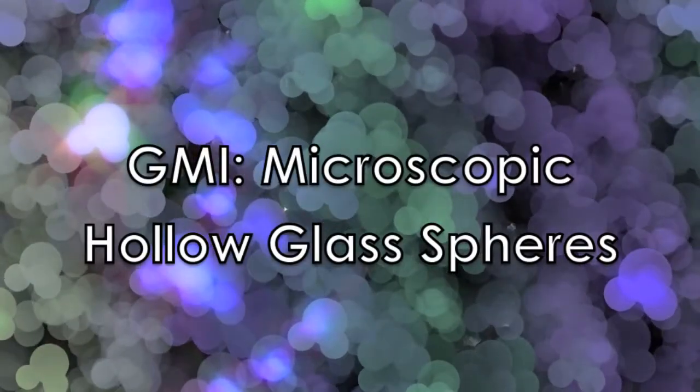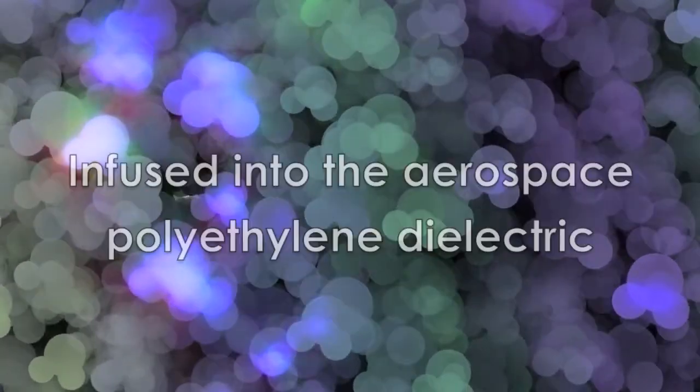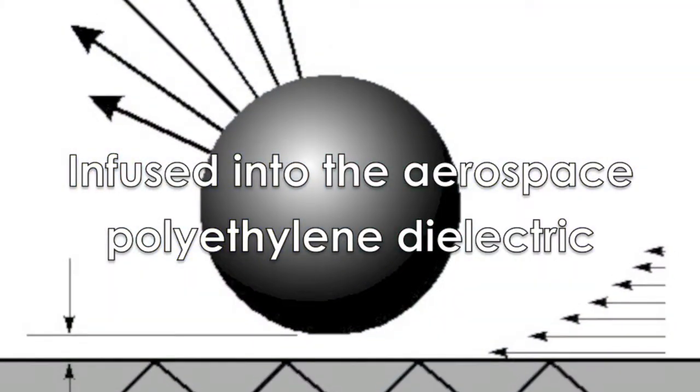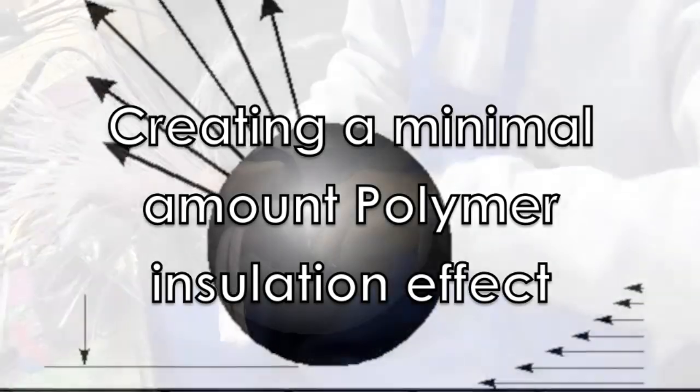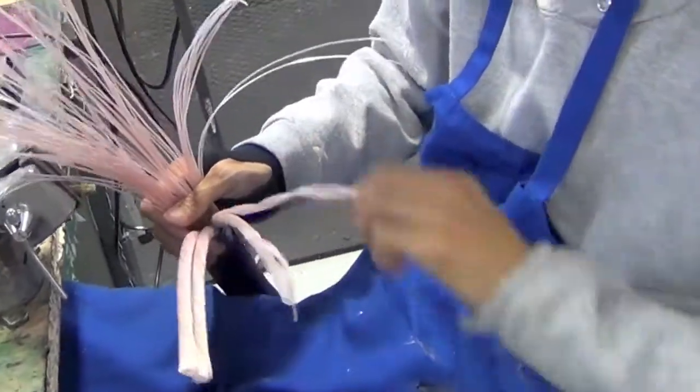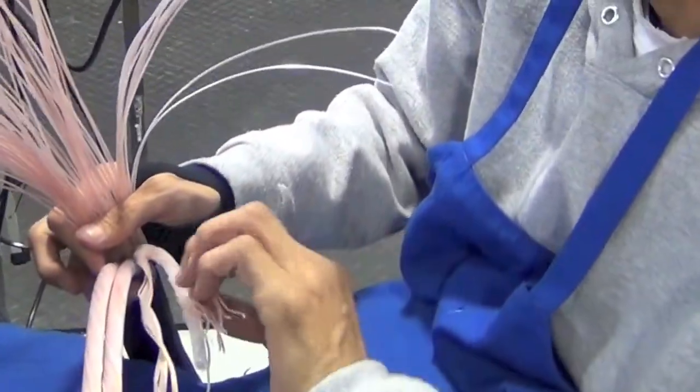GMI can be described as microscopic hollow glass spheres that are infused into the aerospace polyethylene dielectric. Therefore, a minimal amount of Aero PE is actually used in the installation of each Tara Labs conductor for our speaker cables.